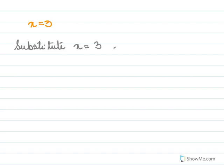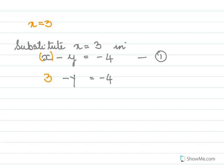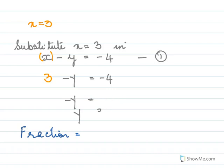Now substitute x equal to 3 to find y. Taking equation 1: x minus y equal to minus 4, putting 3 in for x gives 3 minus y equal to minus 4, so minus y equal to minus 7, and y equal to 7. So the fraction is x over y, which is 3 over 7.